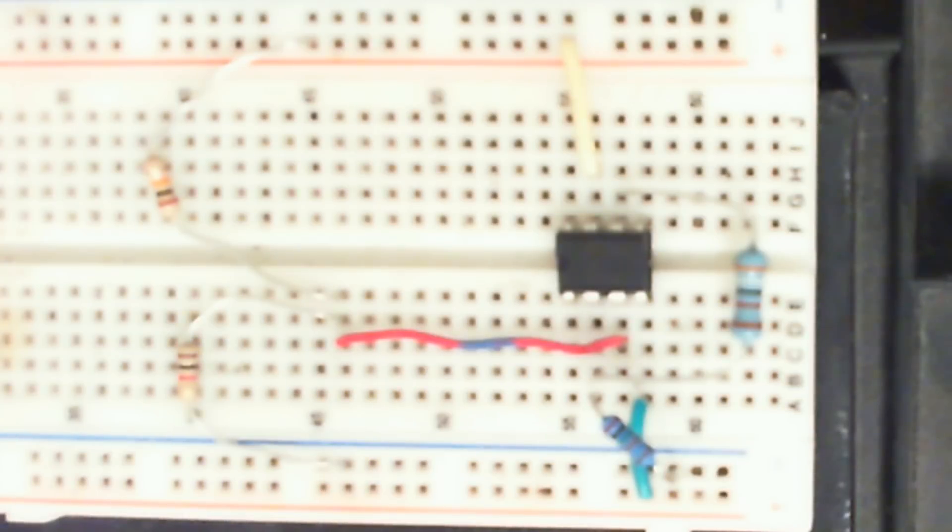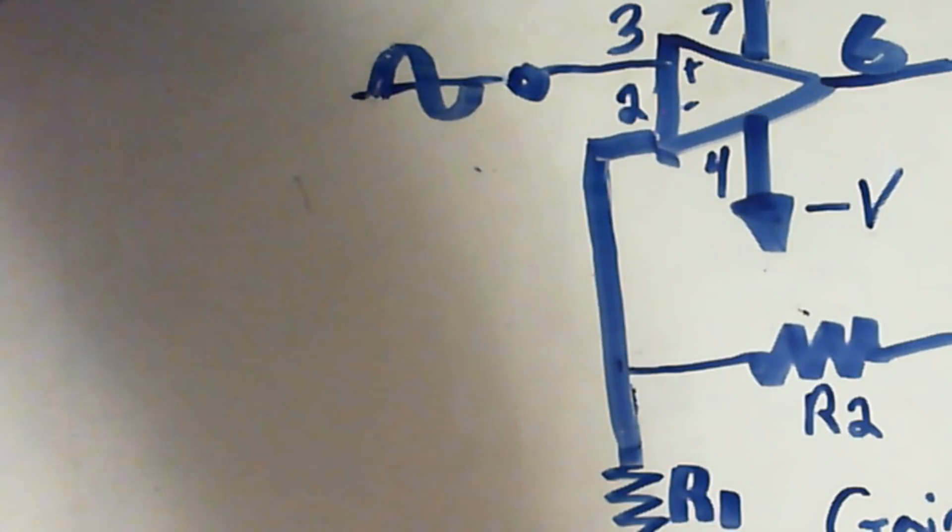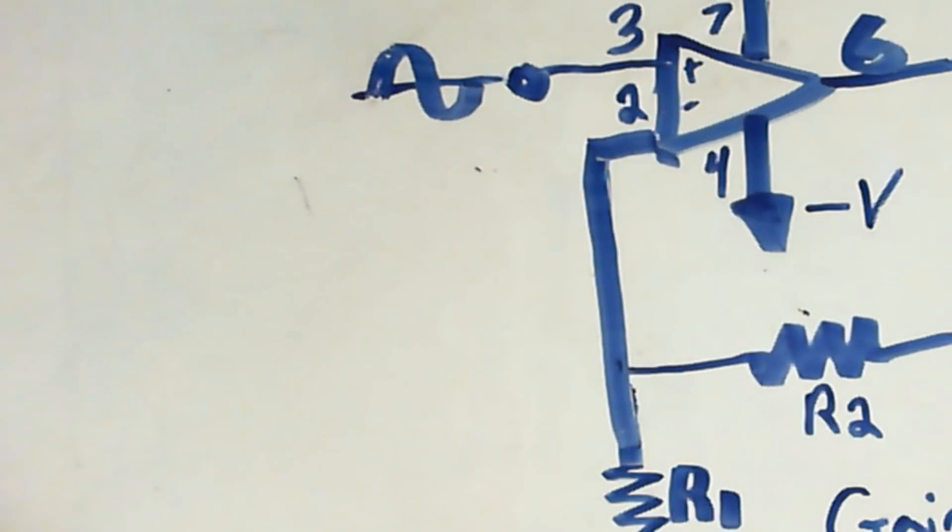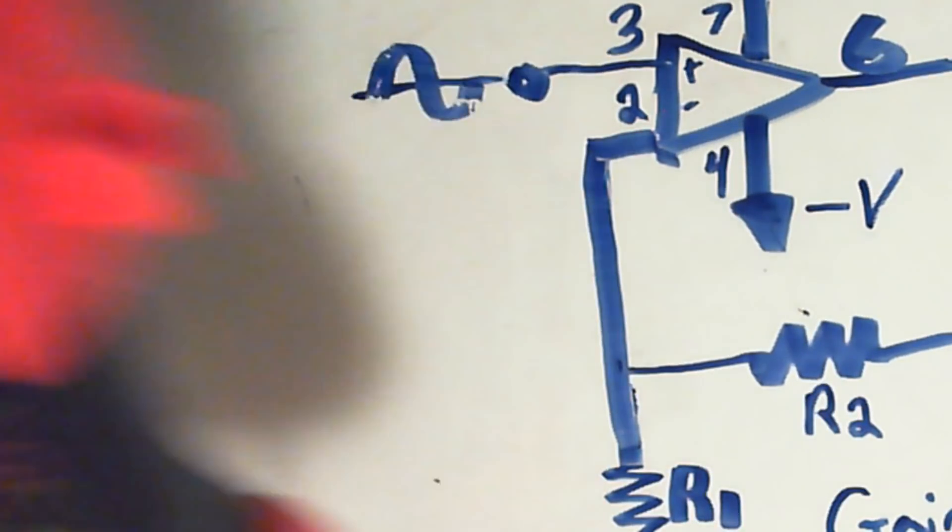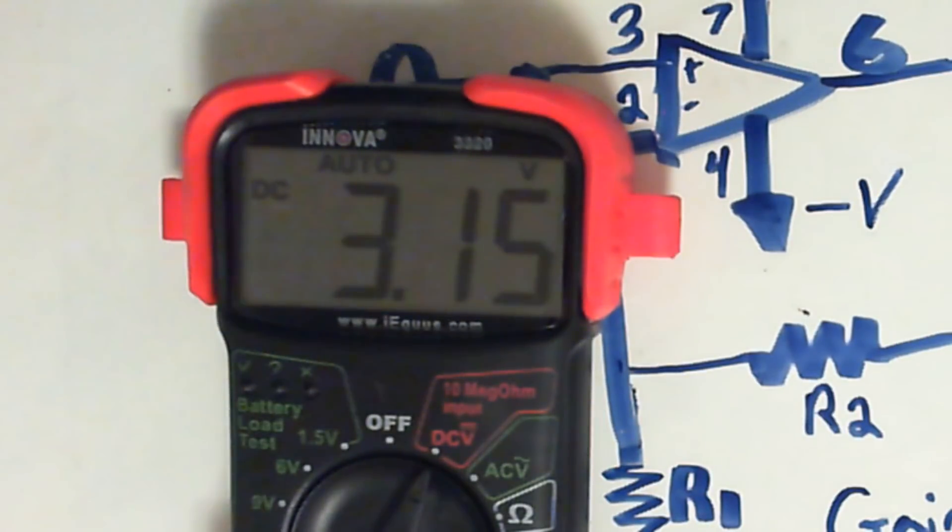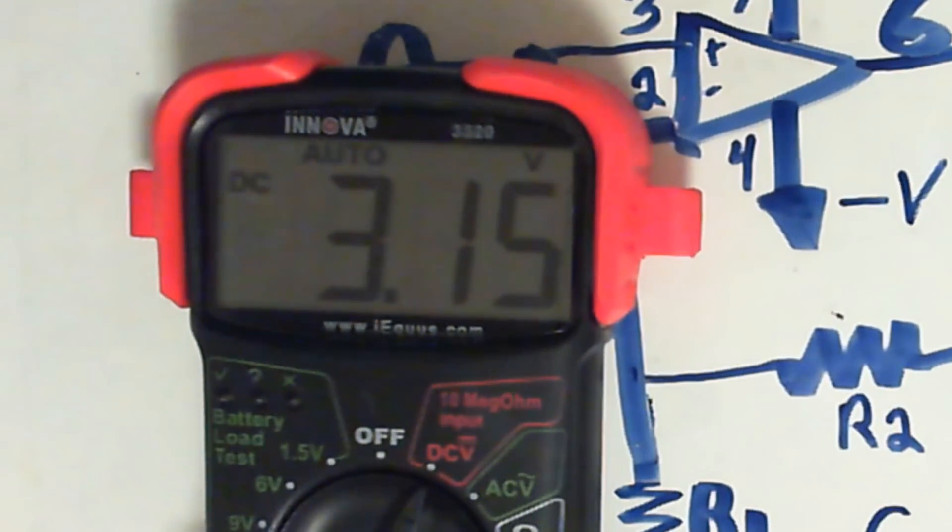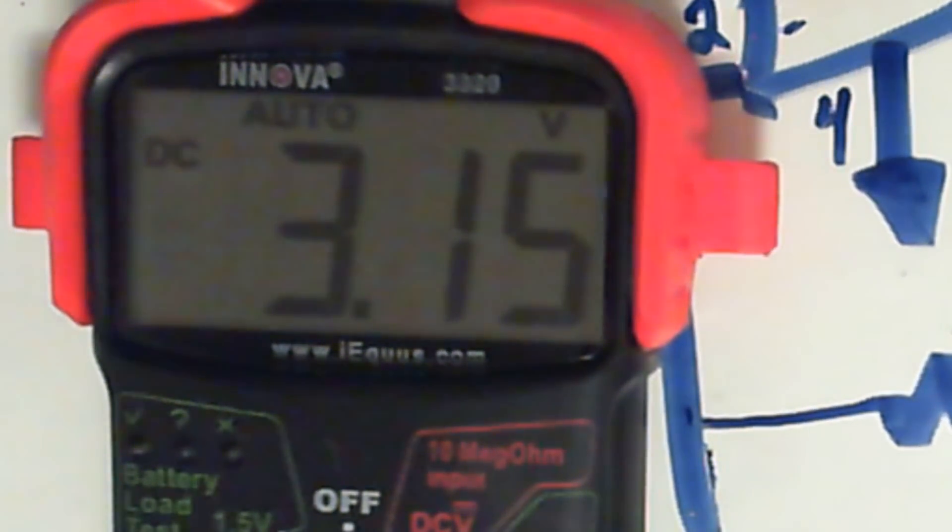Let's go ahead and connect the meter and show you the output. So connect that right to pin 6 like that and turn the meter on. There we go, 3.15 volts.